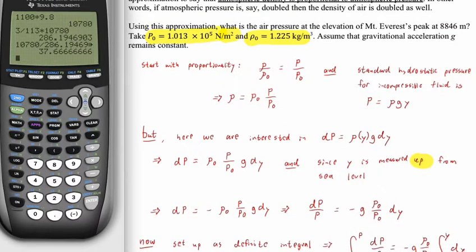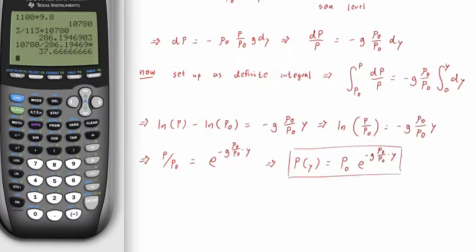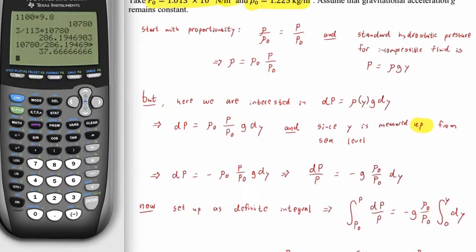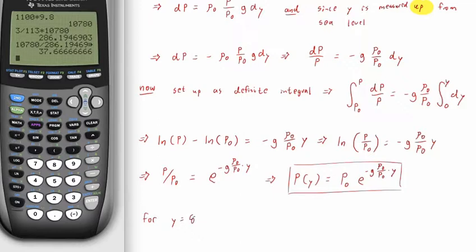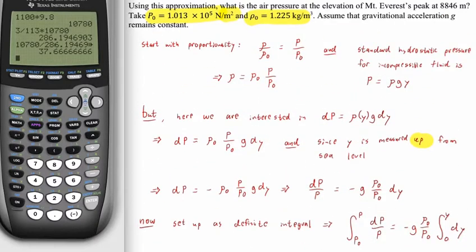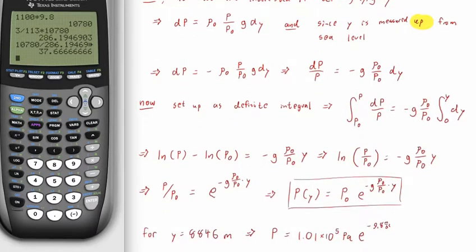In this case, we're going to apply it to Mount Everest, which had a height of 8,846 meters. Let's see what the pressure should be like up there. For y equals 8,846 meters, we're going to have our baseline 1.01 times 10 to the 5 pascals, e to the negative 9.8 meters per second squared, times our initial density 1.225 kilograms per cubic meter, divided by atmospheric pressure at sea level, and then our actual given elevation 8,846 meters.